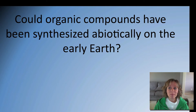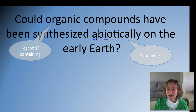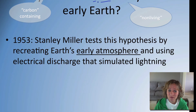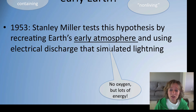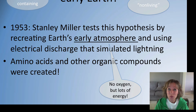Could organic compounds have been made abiotically on the early Earth? Organic means carbon-containing — all life on Earth is carbon-based. Abiotically simply means non-living. In 1953, scientist Stanley Miller decided to test this hypothesis by recreating Earth's early atmosphere and using an electrical discharge that simulated lightning. That early atmosphere had no oxygen but had a lot of energy. What he found was that amino acids and other organic compounds were actually created — not a lot, but it showed that from this abiotic mix of gas and energy, we could get organic compounds.